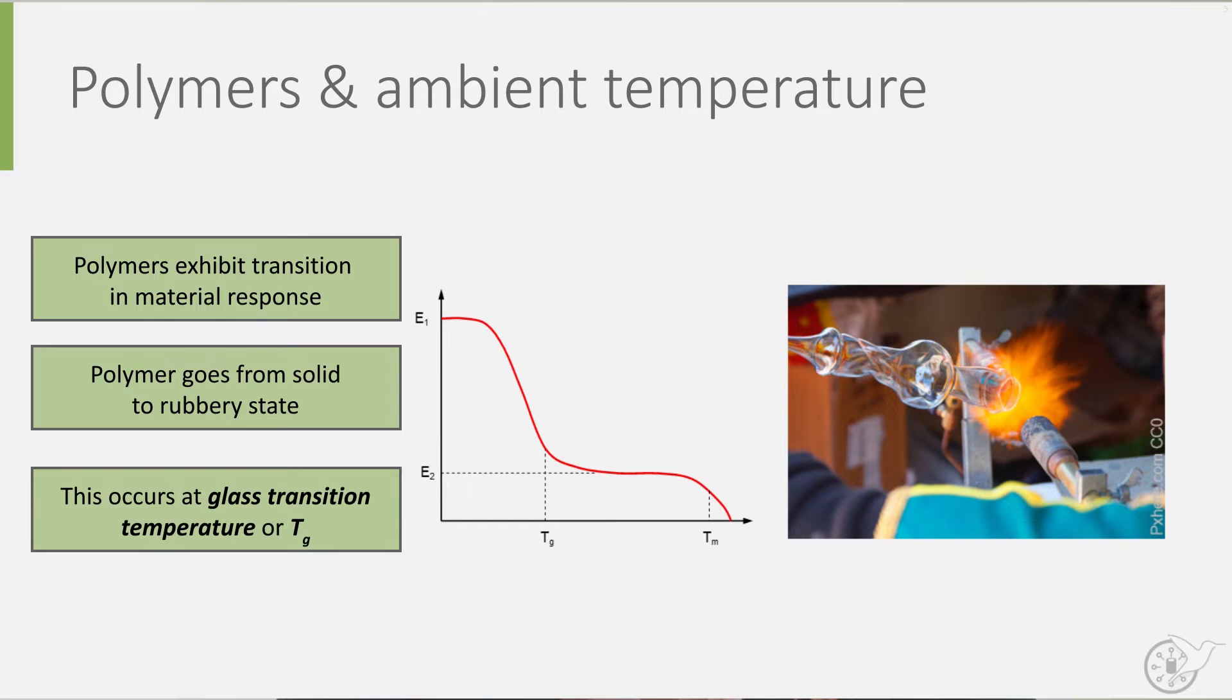As this greatly affects the modulus of elasticity, as can be seen from the graph, polymers are never used above the glass transition temperature.